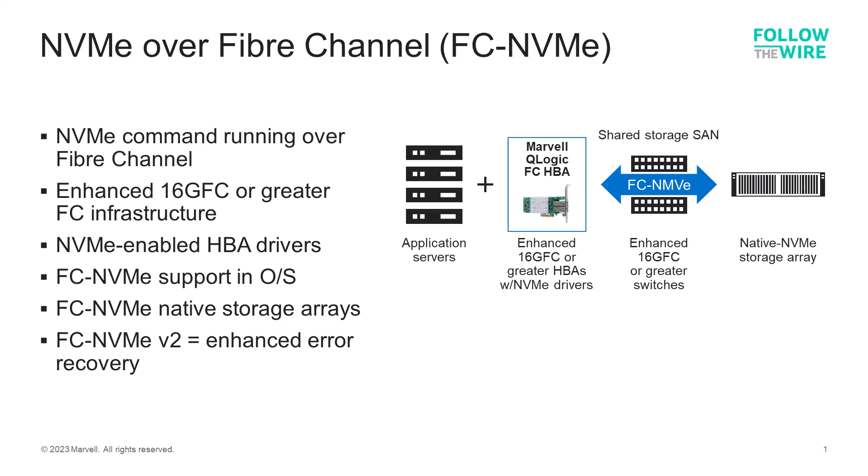The only fabric requirement for FC-NVMe is that the fiber channel fabric must be made up of enhanced 16-gigabit fiber channel or later generation components — and by components I mean HBAs, switches, and target array adapters. It is at the enhanced 16-gigabit point in the fiber channel roadmap where support for NVMe came into being.